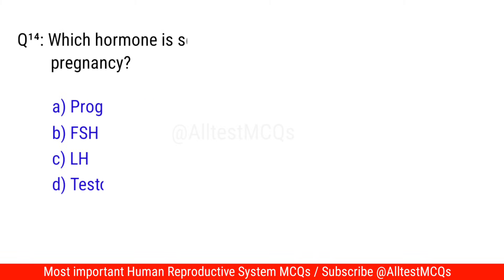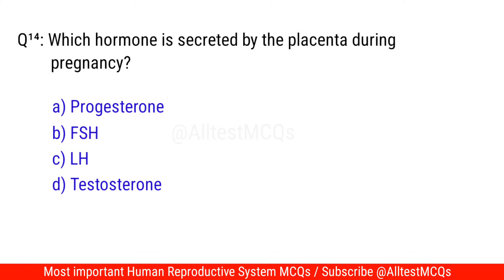Question No. 14: Which hormone is secreted by the placenta during pregnancy? The correct option is C. Progesterone.